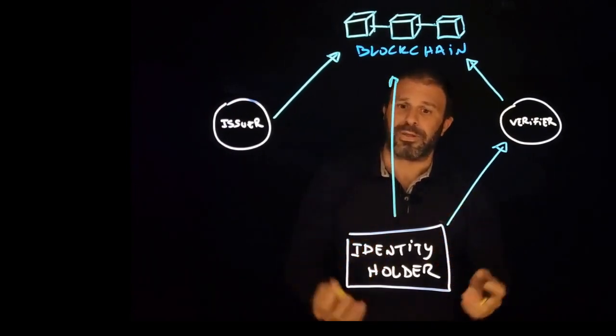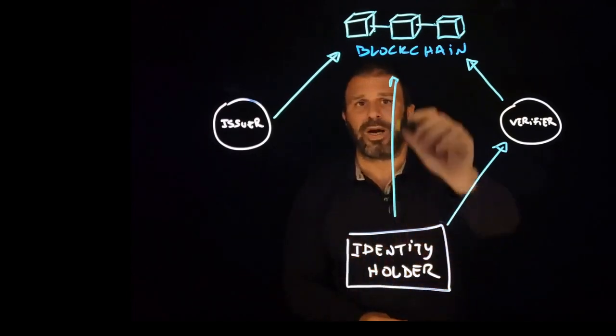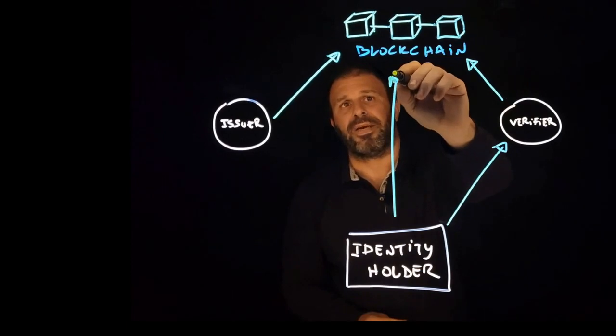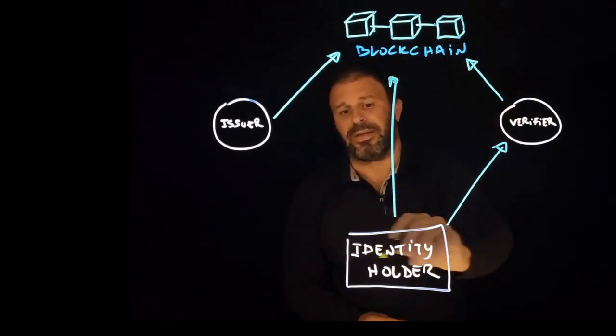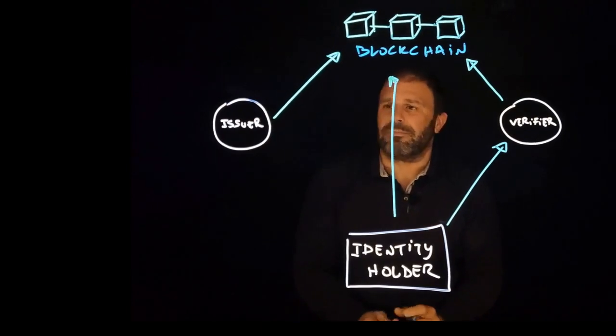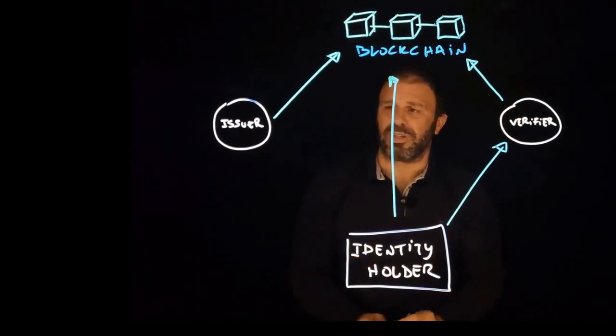All these announcements need to be public and widely available, and that's why they also produce updates into the identity state, either the identity holder or the issuer. There is a last case, something that we call the Merkle tree issuance method.